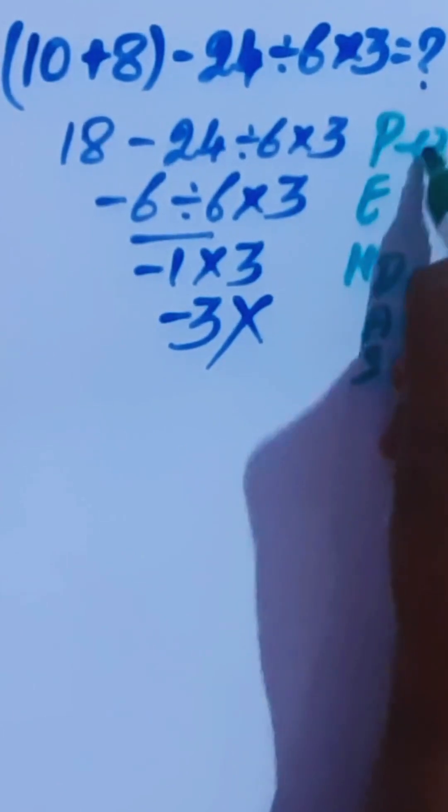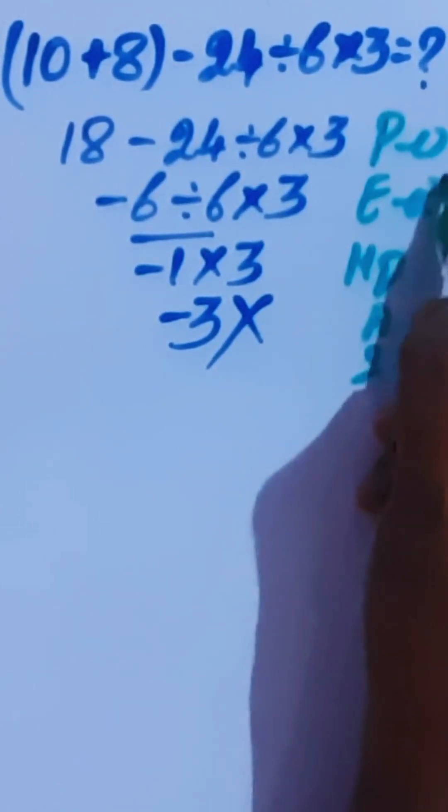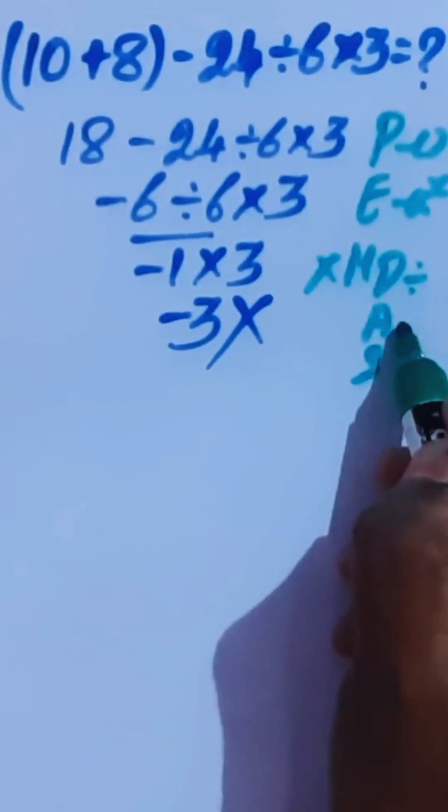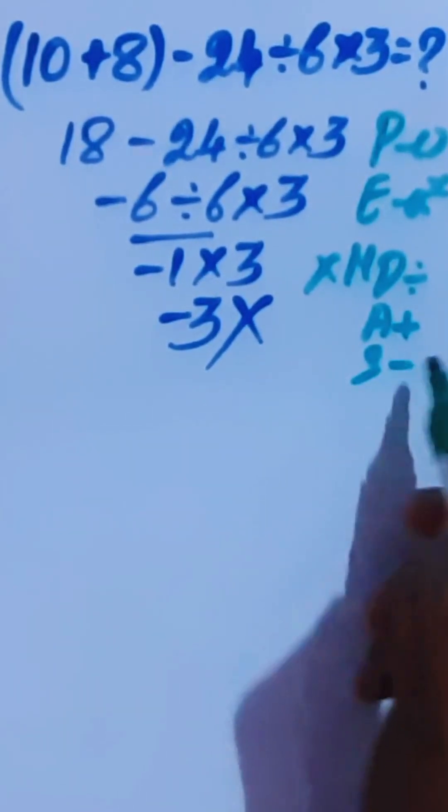Here this is a bracket. This is the exponent. M stands for multiplication. D stands for division. A stands for addition. A stands for subtraction.